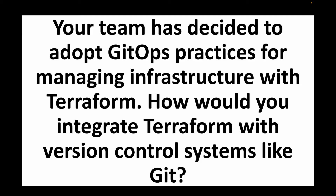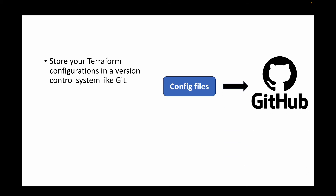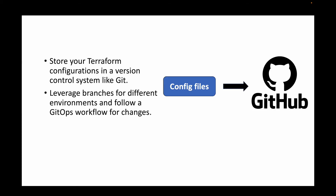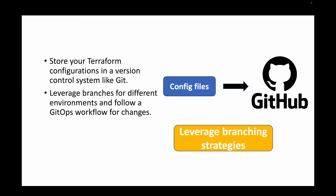The next question is: your team has decided to adopt GitOps practices for managing infrastructure with Terraform — how would you integrate Terraform with version control systems like Git? Just like any code, Terraform configuration files can be maintained on GitHub. We can manage different versions of the code, leverage branching strategies for different environments, and follow a GitOps workflow — pushing code to GitHub and maintaining a branching strategy aligned with our environments.